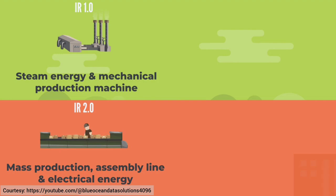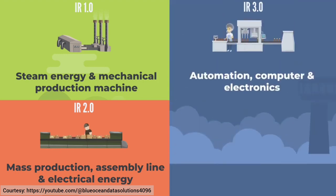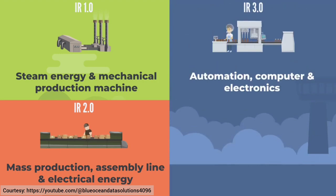Production lines became more common — everything was enabled by electricity in the economy. And then finally, in the 1970s, the advent of the computer and supercomputer really fueled the third industrial revolution. This is where supercomputers, enterprise resource planning, and other technologies really started to digitize businesses and economies throughout the world, which leads us to Industry 4.0 — an extension of the third industrial revolution but certainly a big shake-up and pivot towards where we're headed in the future.